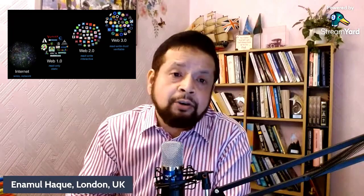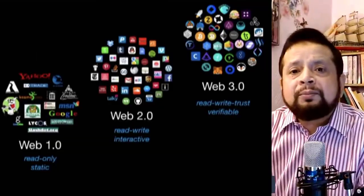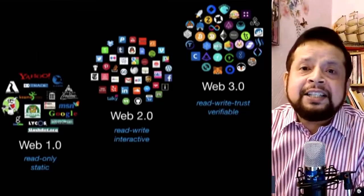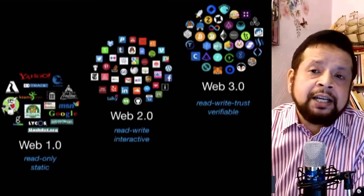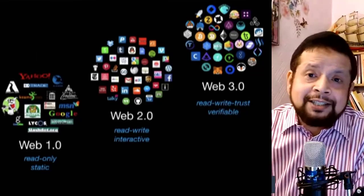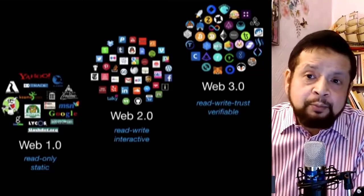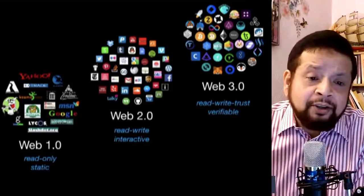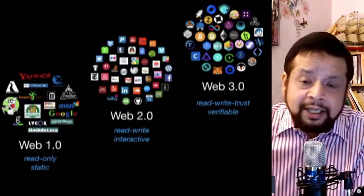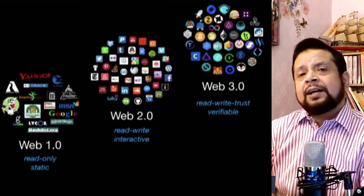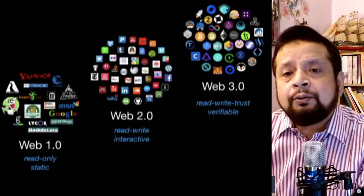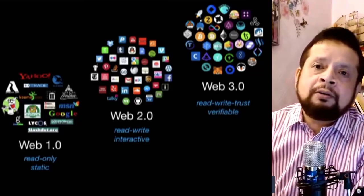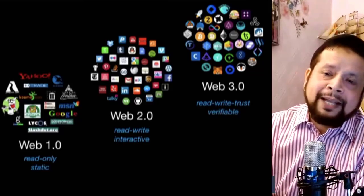Examples of Web 1.0 include CNN and BBC.com as news sites. Web 2.0 platforms include LinkedIn, Facebook, Twitter, and YouTube, where content providers and creators share material.